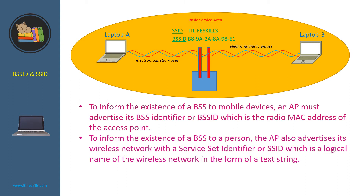To inform the existence of a BSS to a person, the AP also advertises its wireless network with a Service Set Identifier or SSID, which is a logical name of the wireless network in the form of a text string. So in this network, the SSID is IT Life Skills and the BSS ID is this MAC address.